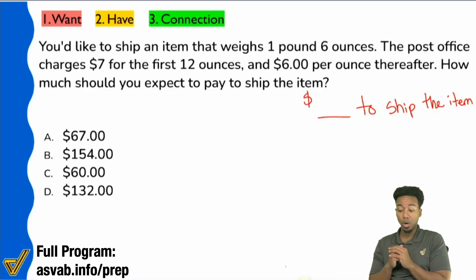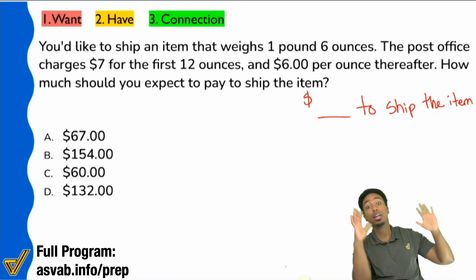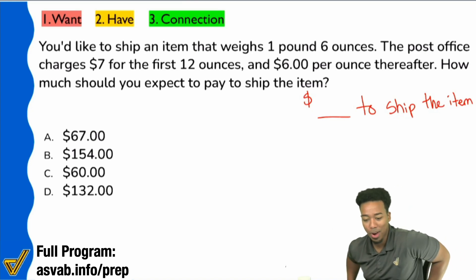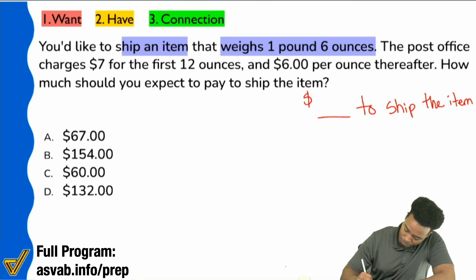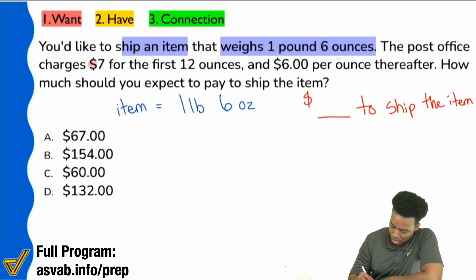When they say seven dollars for the first 12 ounces, that means that this first part, these first 12 ounces, only paying seven dollars. Let's write that down. Item equals one pound six ounces. So now that we have that written down, the rule was seven dollars for the first 12 ounces.